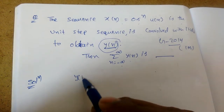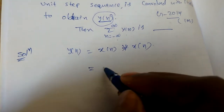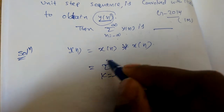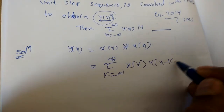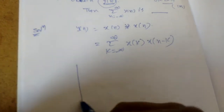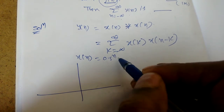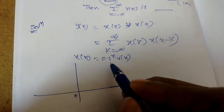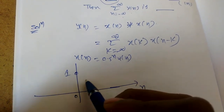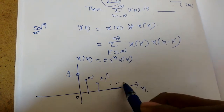y(n) is given as x(n) convolved with itself. We know the convolution formula: y(n) = sigma from k = -infinity to infinity of x(k) * x(n-k). Now x(n) = (0.5)^n * u(n), meaning it starts from 0 to infinity. When n = 0 we get 1, n = 1 gives 0.5, n = 2 gives 0.5 squared, and so on.